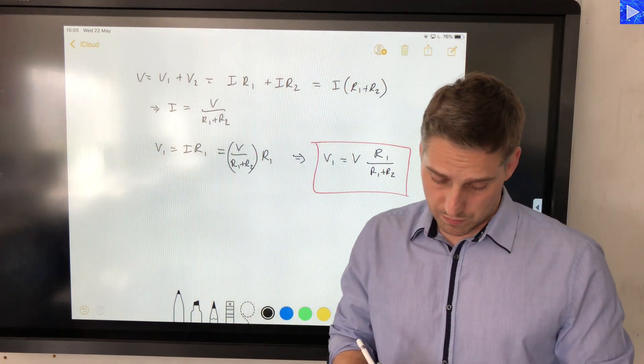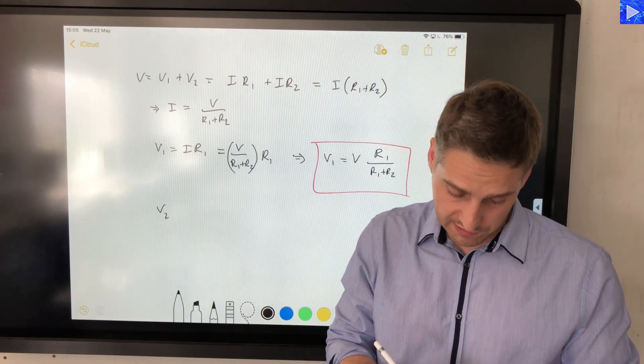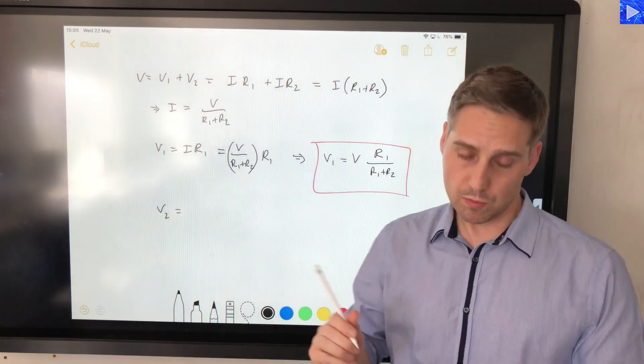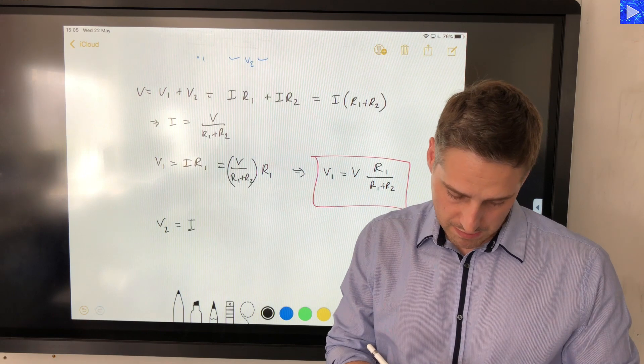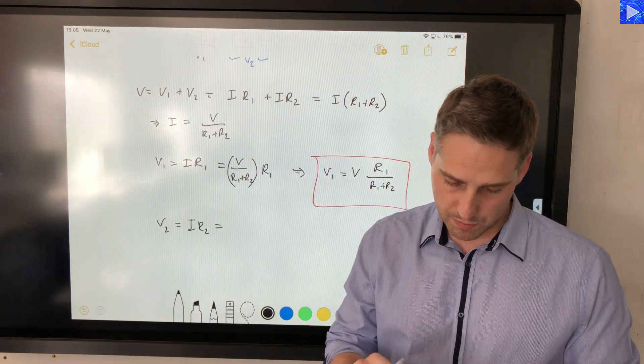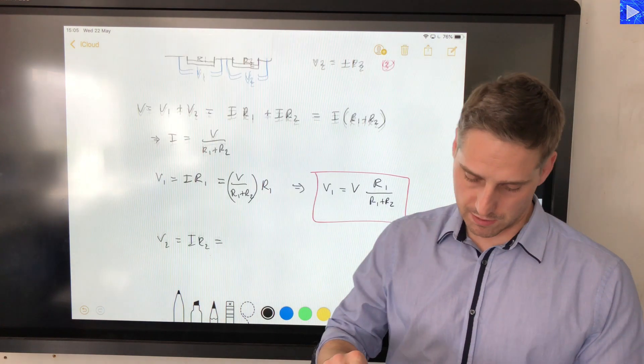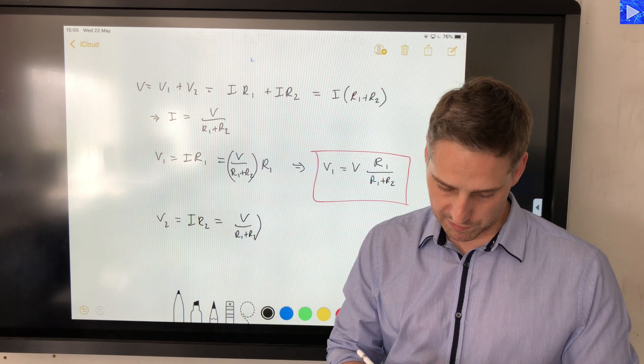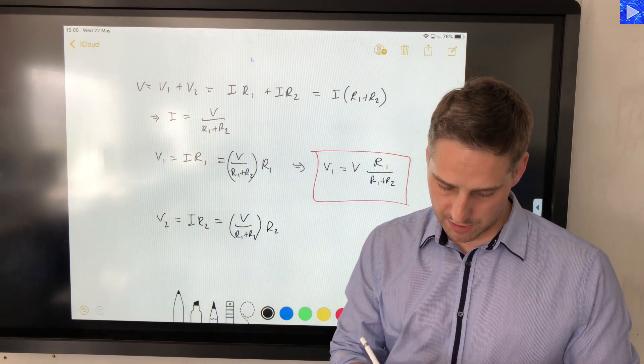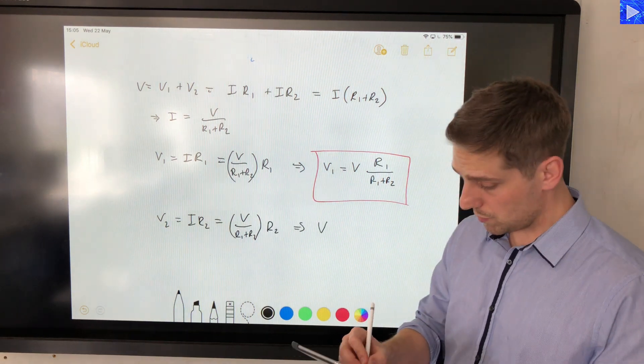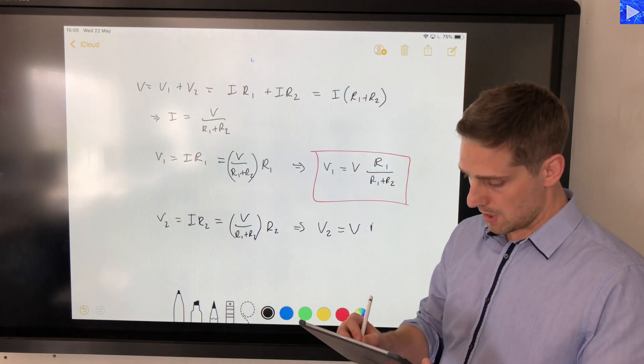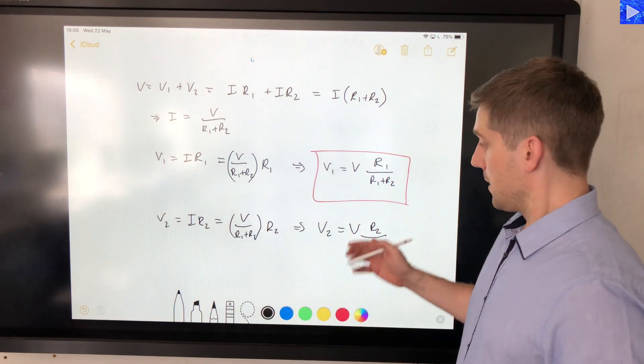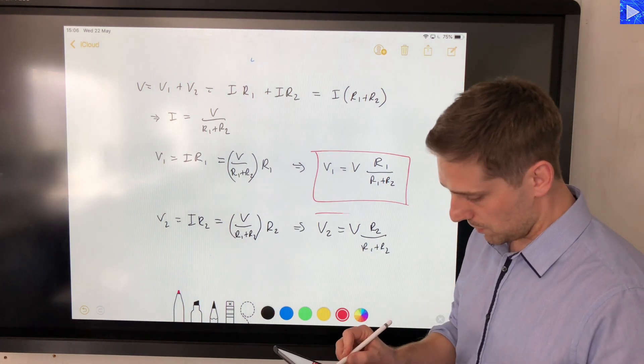If we want to know what V2 is, it's obviously going to be the same as this, except it's going to be R2 on top. I'll just prove that to you very quickly. We have I R2, that's from equation three here. So I R2, make the same substitution, V over R1 plus R2, substituting that for I, multiplied by R2. So V2 will equal V times R2 over sum of the resistors. Same thing applies in terms of units.